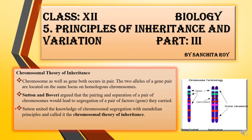In our previous video, I have already discussed about how the characters are transmitted from one generation to another. Mendel gave certain theories: the law of dominance, law of segregation, and law of independent assortment. According to Mendel, there are a pair of genes and these genes are getting transmitted from one generation to another, helping in transferring the characters.